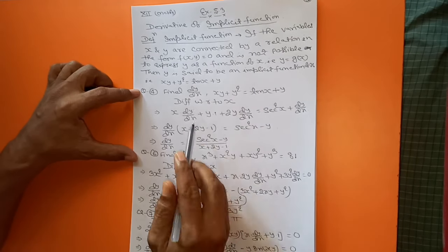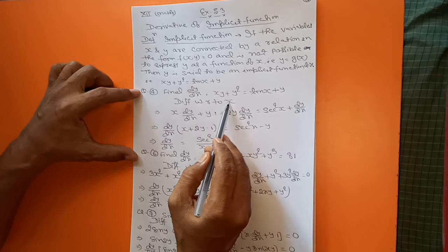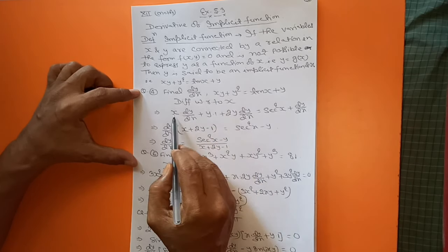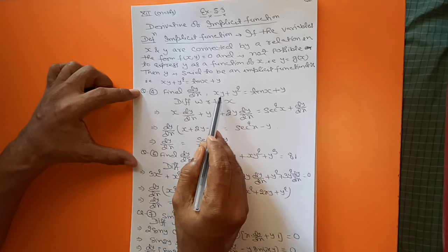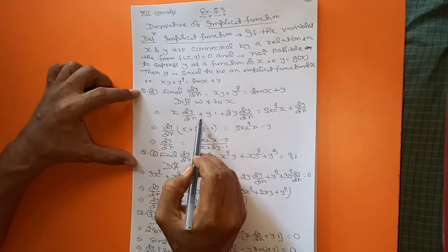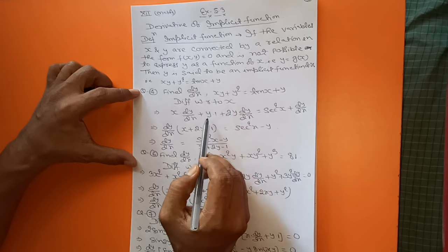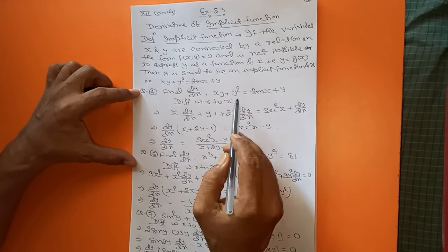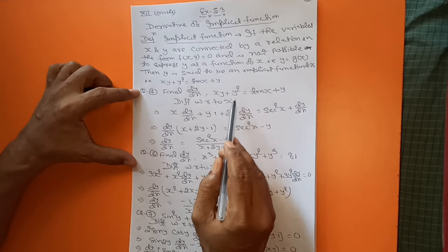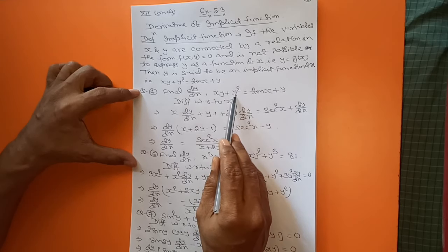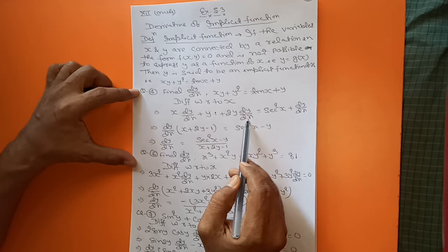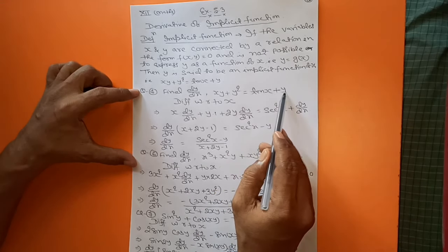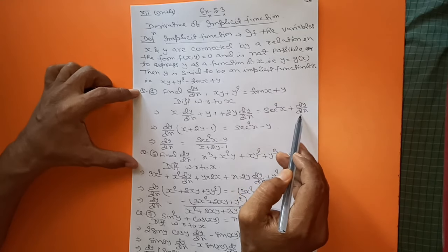First of all, differentiate with respect to x. Here we have xy, which is a product function. Take the first function x: differentiation of y is dy/dx, plus the second function y and differentiation of x is 1. Again, for y², differentiate to get 2y · dy/dx. Differentiation of 10x equals 10, plus differentiation of y is dy/dx.